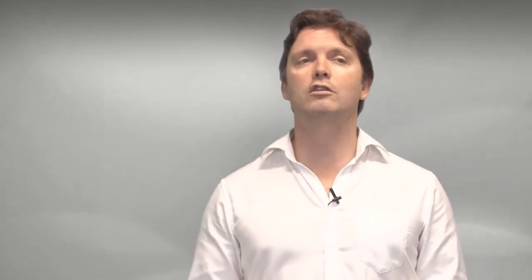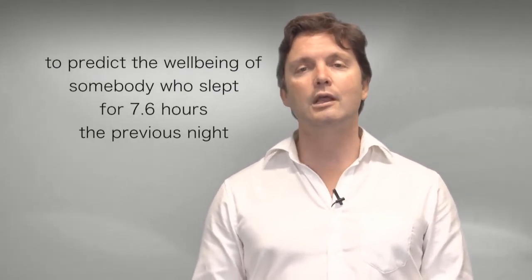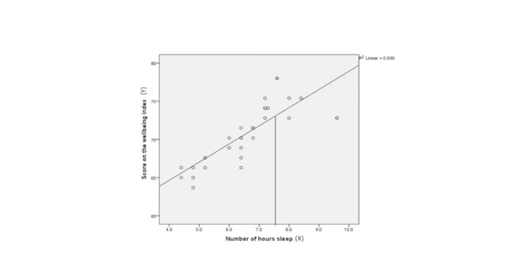So suppose I wanted to predict the wellbeing of somebody who slept 7.6 hours the previous night. In the diagram, I draw a line at the sleep score of 7.6, perpendicular to the x axis. At the point where the line meets the line of best fit, another line is drawn perpendicular to the y axis, to give the best possible prediction, y hat, of the person's wellbeing score.